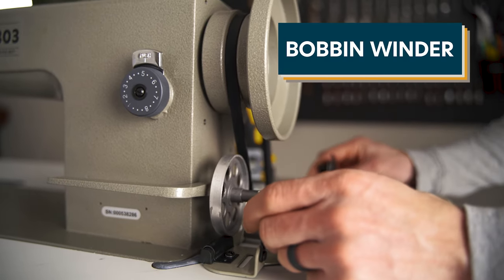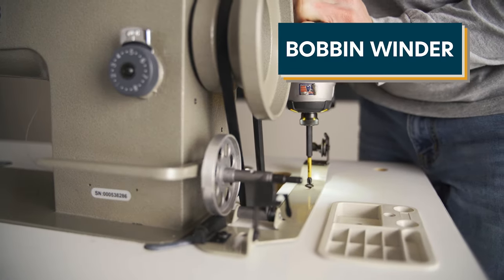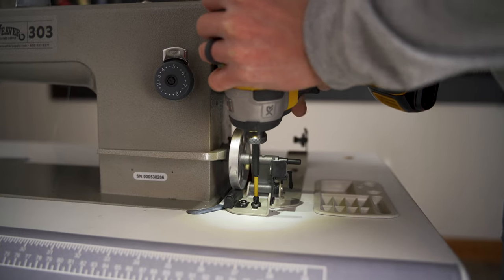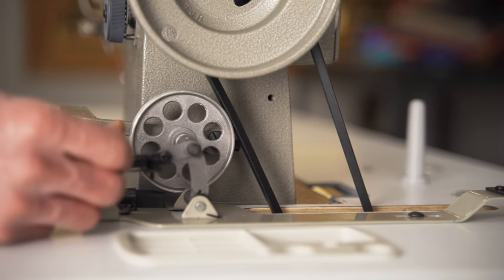Screw the bobbin winder to the table with two screws, making sure that it is in line with the belt and that there is about a 1/8 inch to 1/4 inch gap between them.